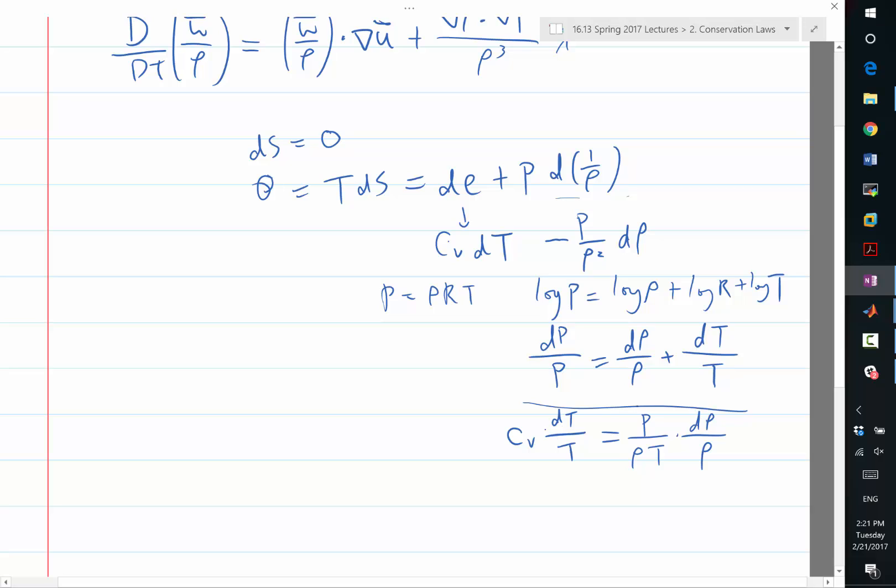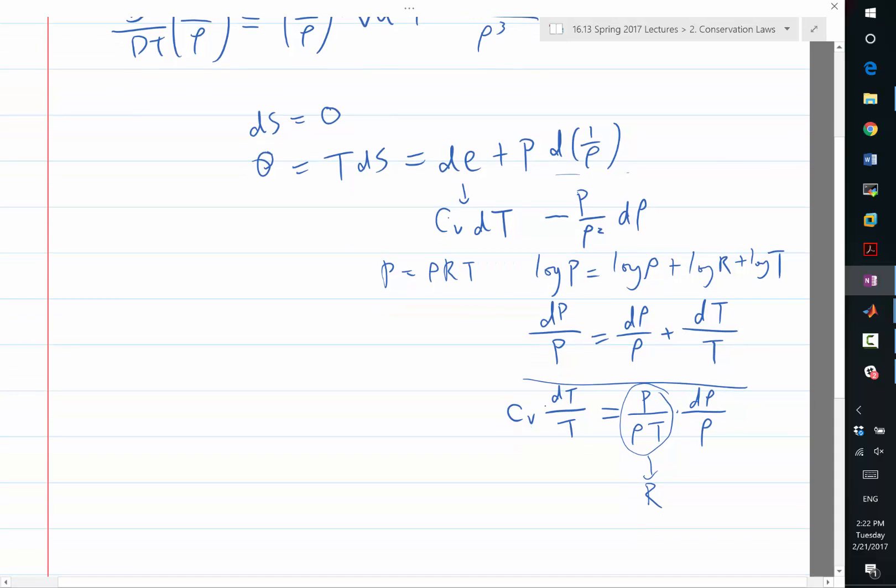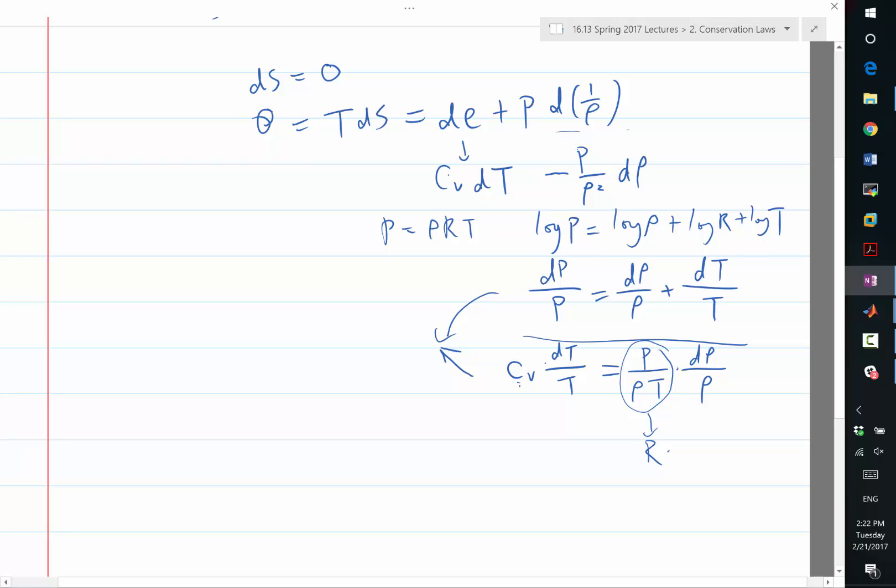So basically p over rho T is actually R. And cv divided by R, the ratio between cv and R is 1 divided by gamma minus 1. So these things give you some kind of proportionality between how much you can change in p, rho, and T.